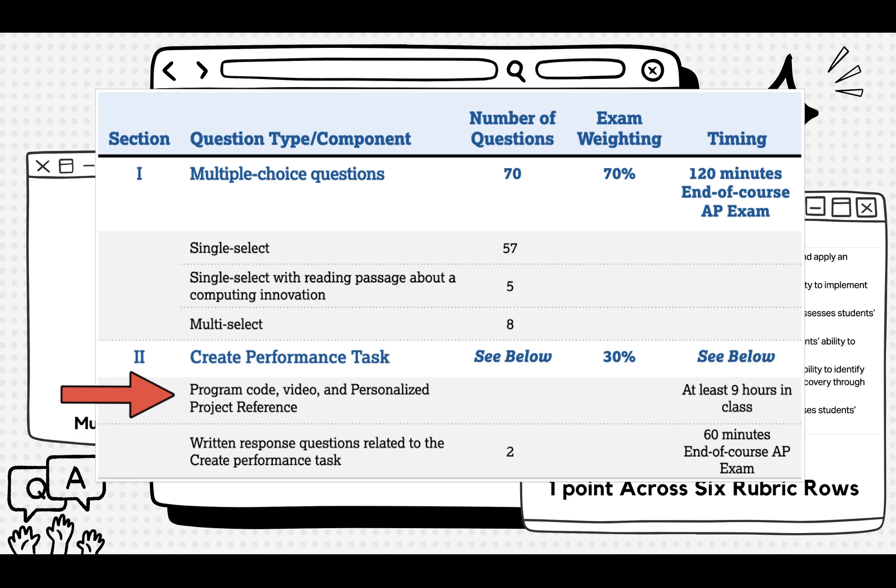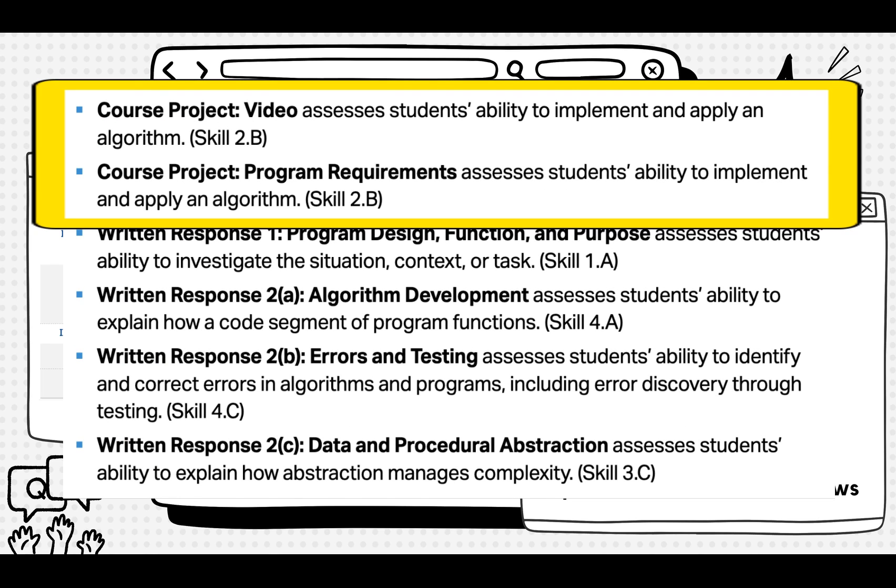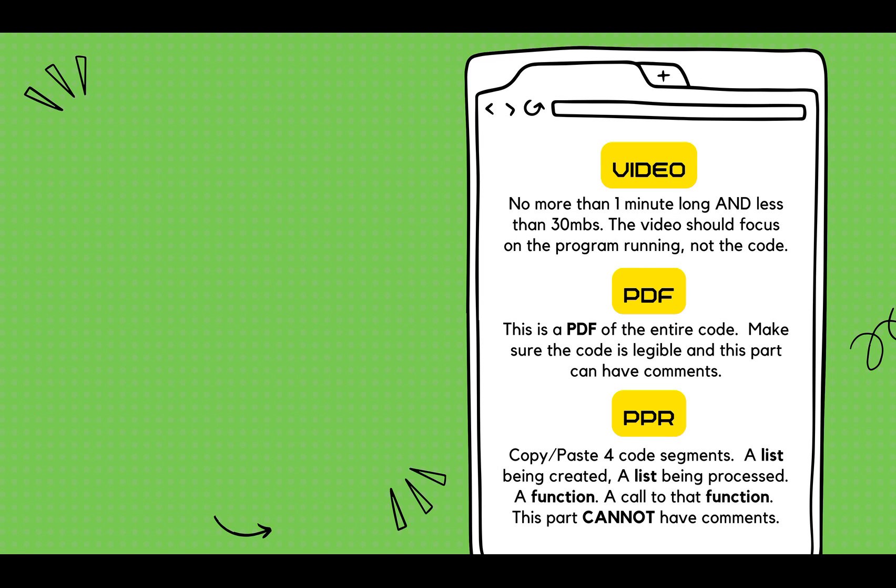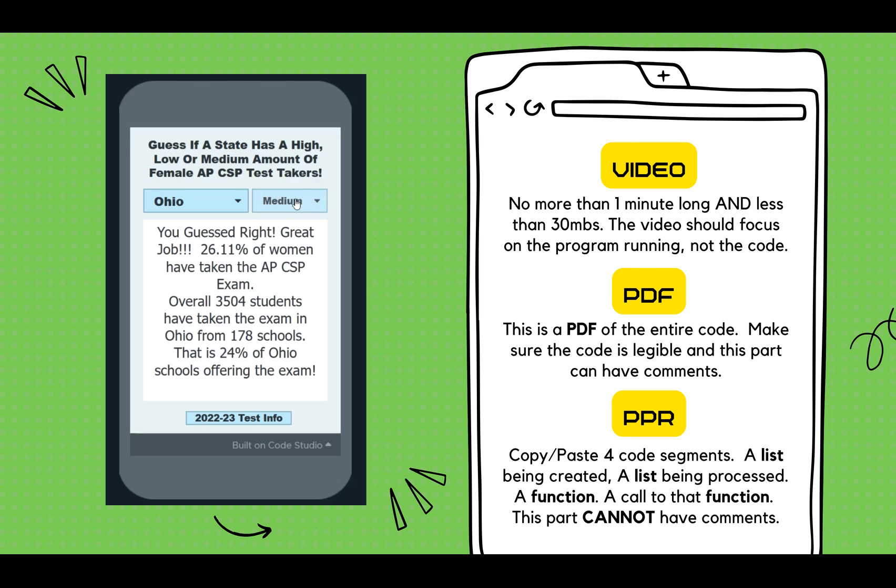The first part is row 1 and 2 from the rubric. They cover the key requirements you need to submit to your digital portfolio before the exam. What are these requirements? First, you need a one-minute video of your app running. Do not show code. Show an input and an output.